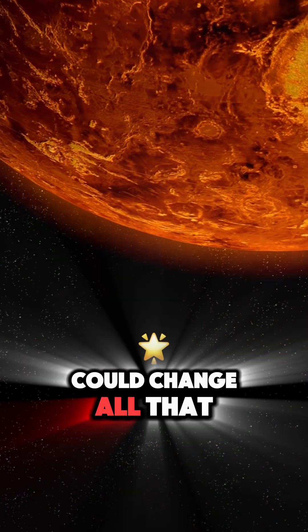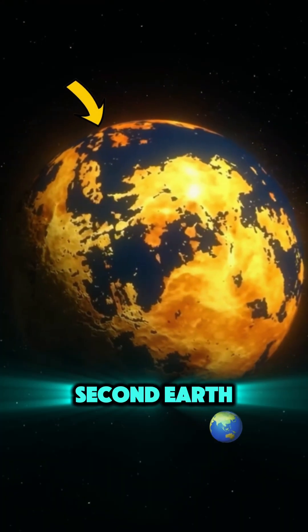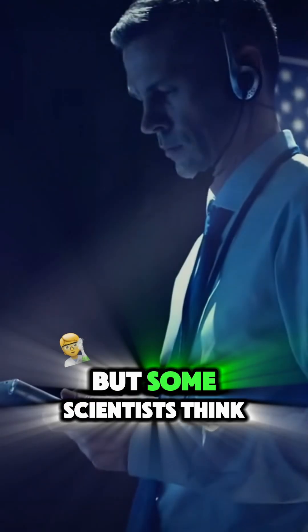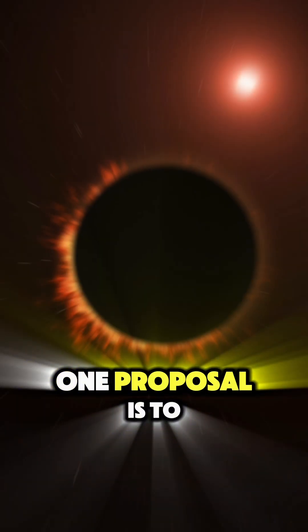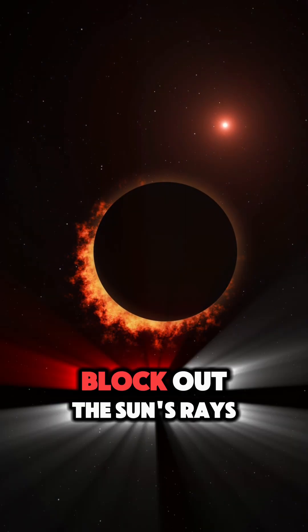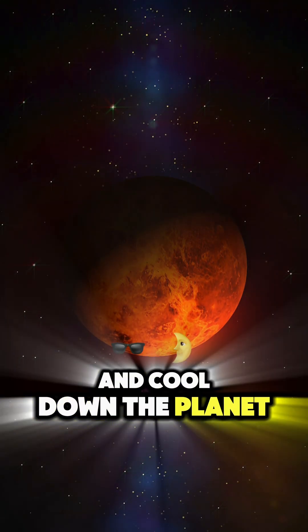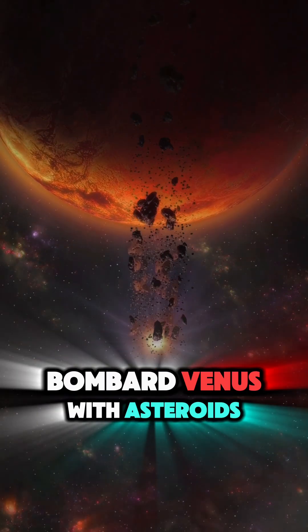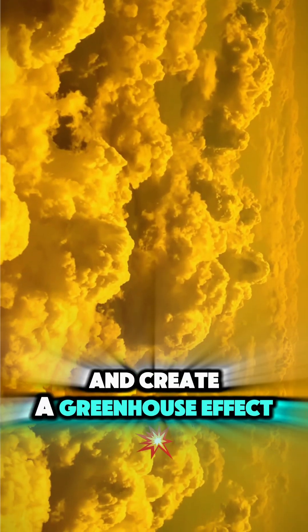But what if we could change all that? What if we could turn Venus into a second Earth? It's a crazy idea, but some scientists think it might be possible. One proposal is to use massive sunshades to block out the sun's rays and cool down the planet. Another idea is to bombard Venus with asteroids to release water vapor and create a greenhouse effect.